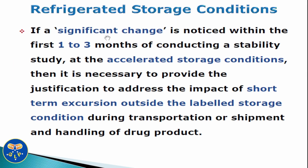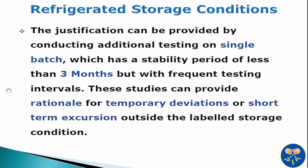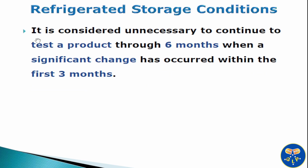If a significant change is noticed within the first 1 to 3 months of conducting a stability study at the accelerated storage condition, then it is necessary to provide justification to address the impact of short term excursions outside the labelled storage condition during transportation or shipment and handling of drug product. The justification can be provided by conducting additional testing on a single batch with a stability period of less than 3 months but with frequent testing intervals. These studies can provide rationale for temporary deviation or short term excursions outside the labelled storage condition. It is considered unnecessary to continue to test a product through 6 months when a significant change has occurred within the first 3 months.